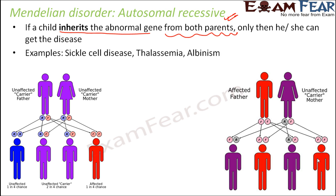Some examples of autosomal recessive diseases are sickle cell disease, thalassemia, and albinism. We have discussed each of these diseases in detail. The key thing to remember: for autosomal dominant disorders, the abnormal gene is the dominating one, so even if one allele is present the person will have the disorder. For autosomal recessive disorders, the recessive allele is the defective gene, so the person gets affected only when both alleles are recessive.